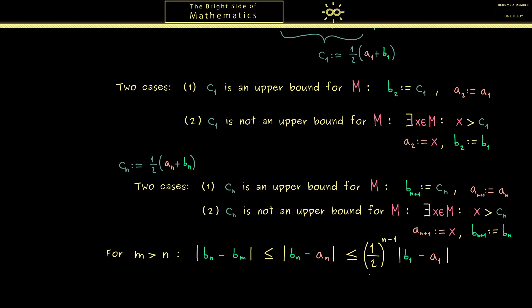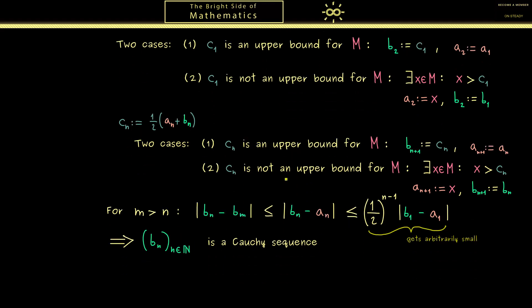And now this whole number here we can get arbitrarily small. This is what you can show and then you can formalize the conclusion that b_n is indeed a Cauchy sequence. And then the last step is just using the completeness axiom to show that b_n is a convergent sequence. Also the only possibility for the limit then is the supremum of M.